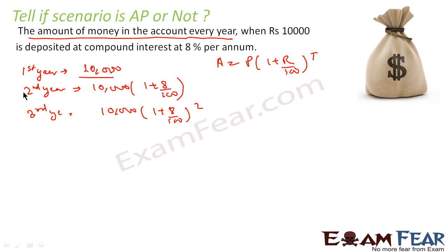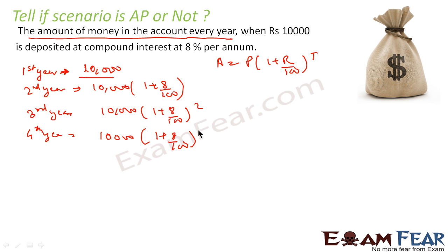At the start of the second year: 10,000 into (1 + 8/100)¹ = 10,800 rupees. At the start of the third year: 10,000 into (1 + 8/100)² ≈ 11,664 rupees. At the start of the fourth year: 10,000 into (1 + 8/100)³.